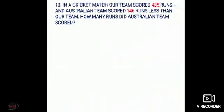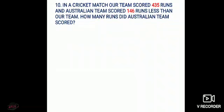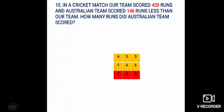Let's take another example. This is question 10 of the same exercise. In a cricket match our team scored 435 runs and the Australian team scored 146 runs less than our team. How many runs did the Australian team score? After reading this question you understand that our team scored 435 runs. You have to find the runs scored by the Australian team, but they scored 146 runs less. So subtract 146 from 435 and you get 289 runs scored by the Australian team.